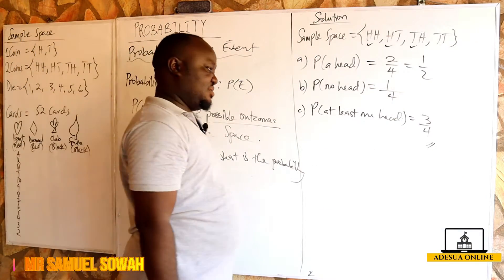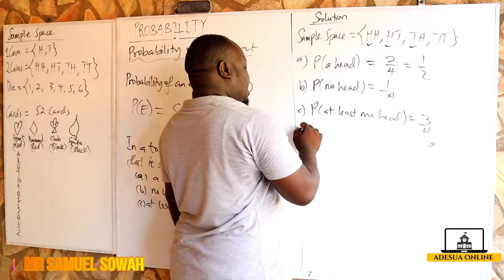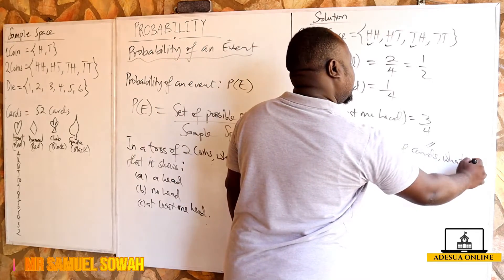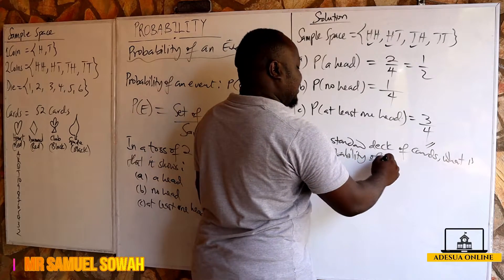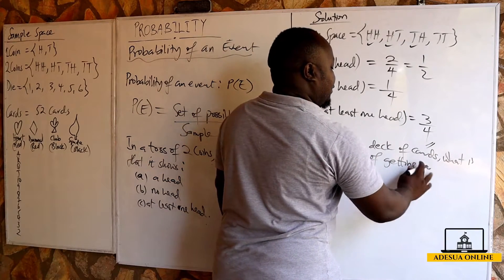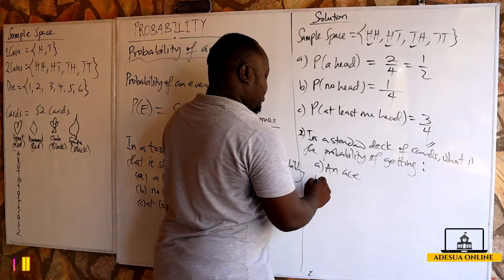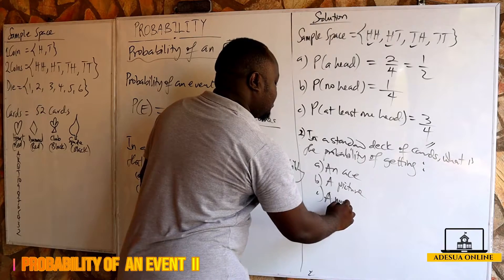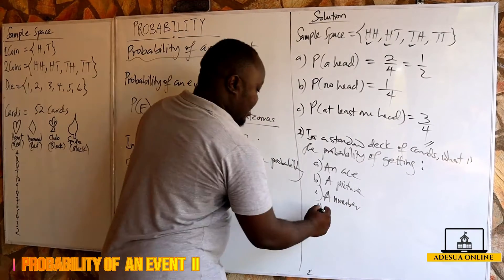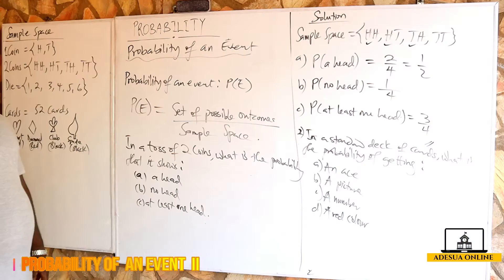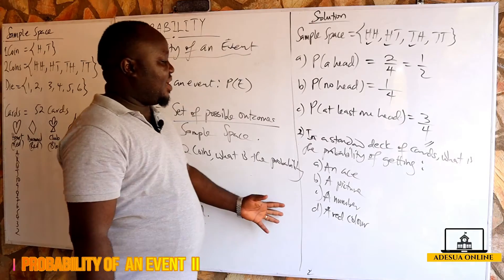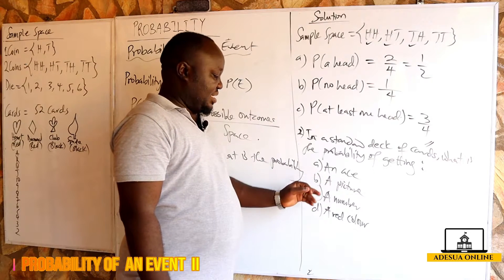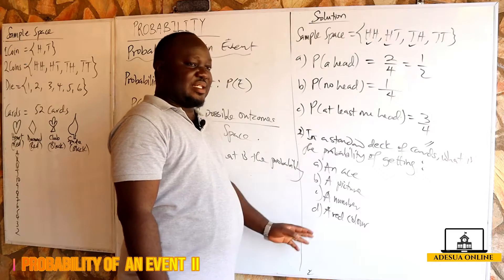Now let's say we have a standard deck of cards. In our second question: in a standard deck of cards, what is the probability of getting A) an ace, B) a picture, C) a number, and D) a red color? Now let's solve this question.